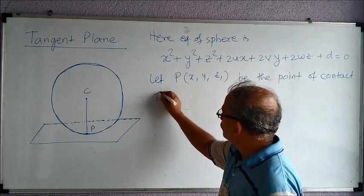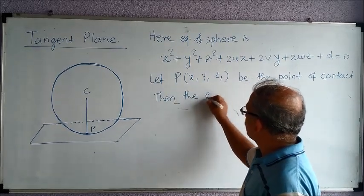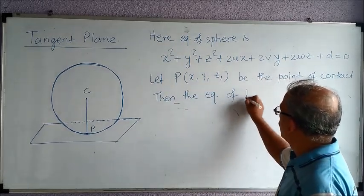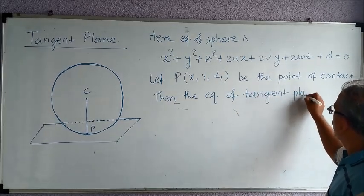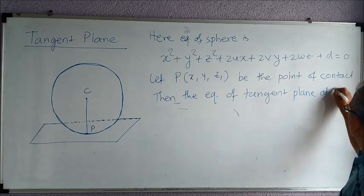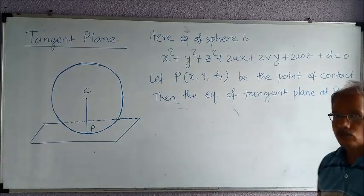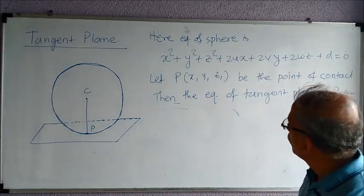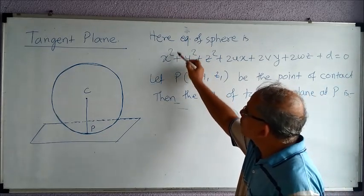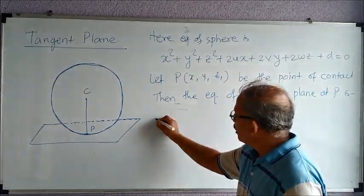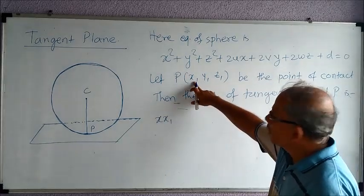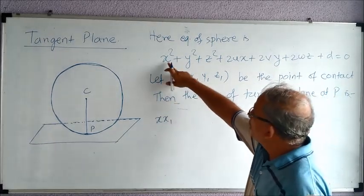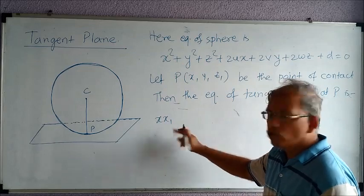Then the equation of the tangent plane at P is: see how I am writing this. Now in place of x square, what I am writing is x into x₁. See, x₁ is a coordinate of P. So in place of x square, I am writing x into x₁.